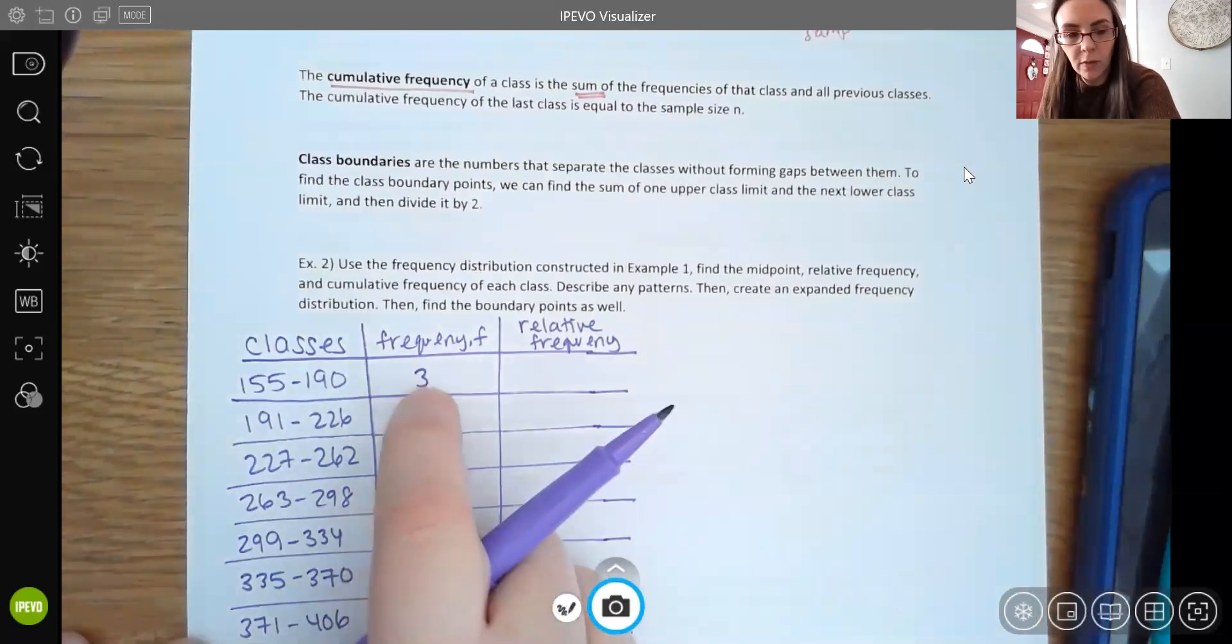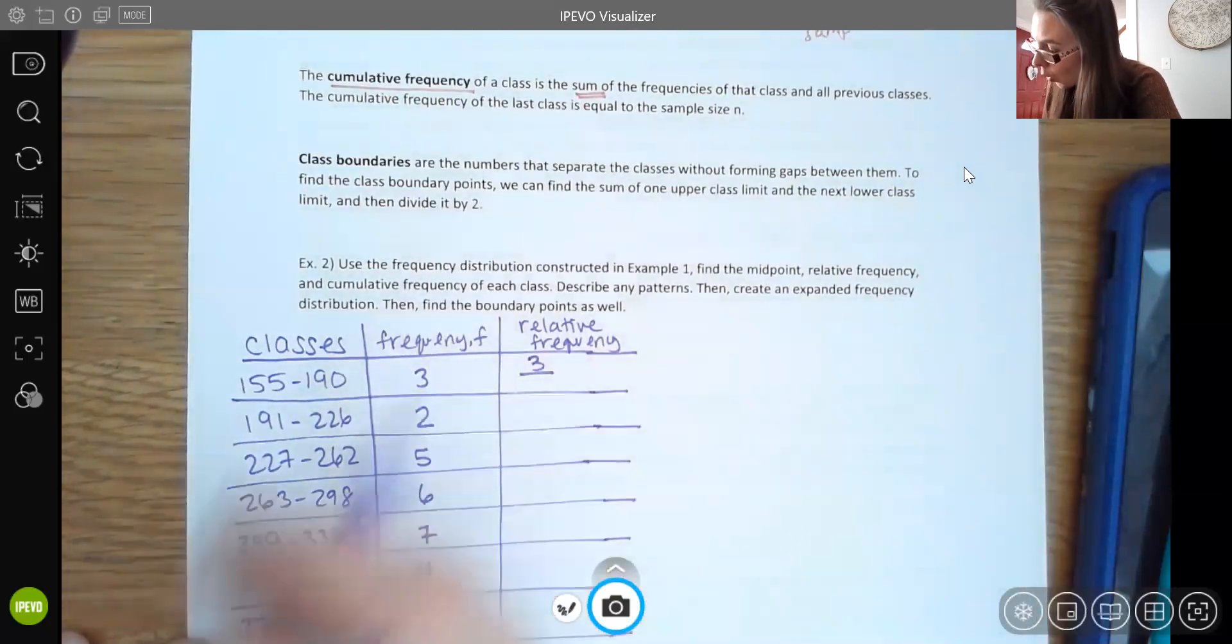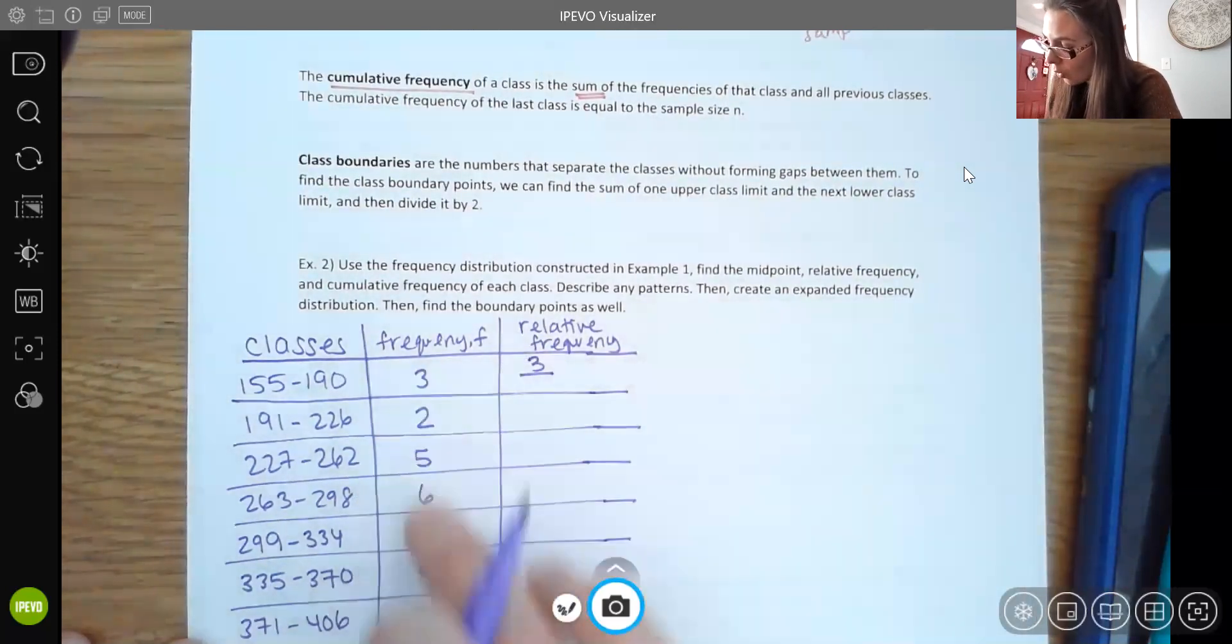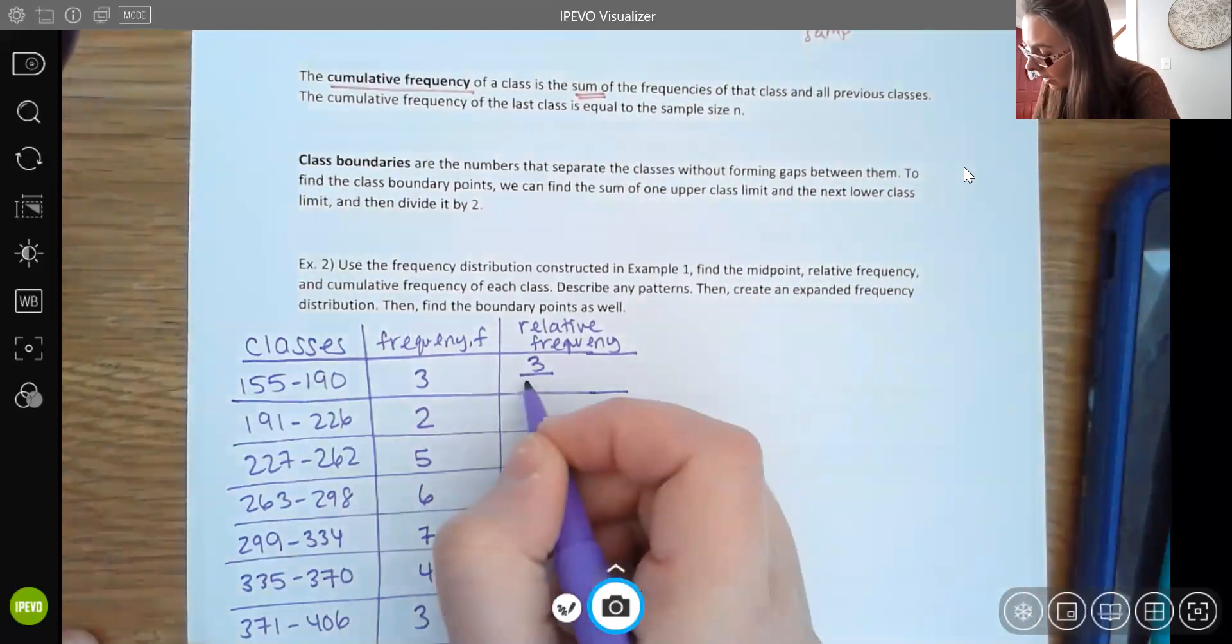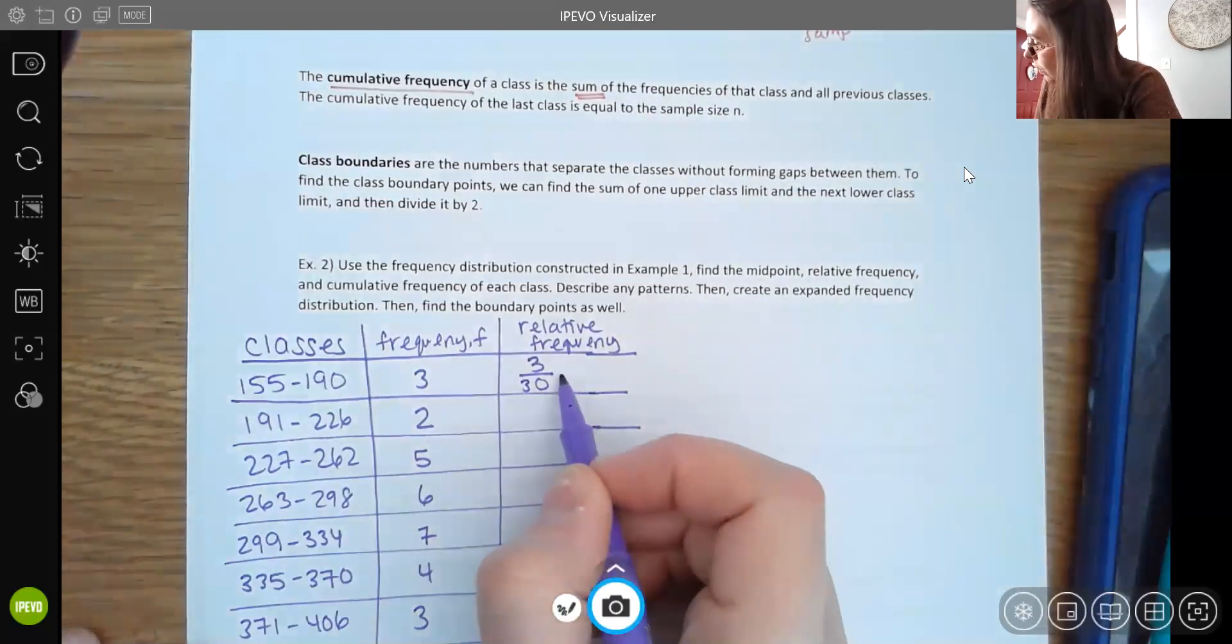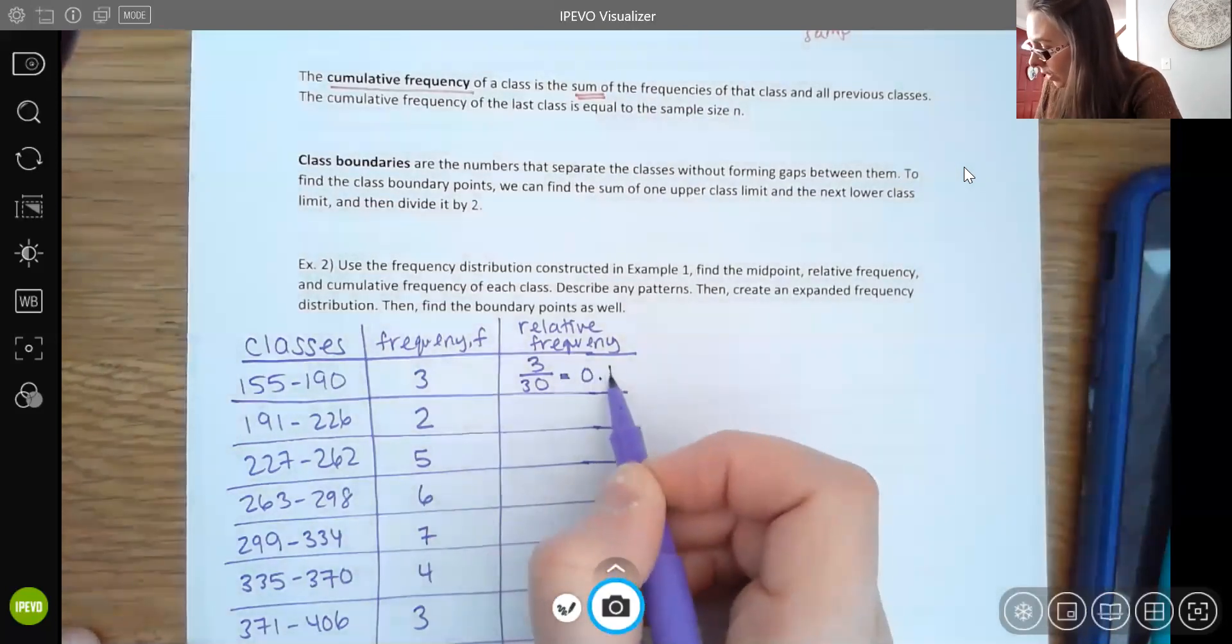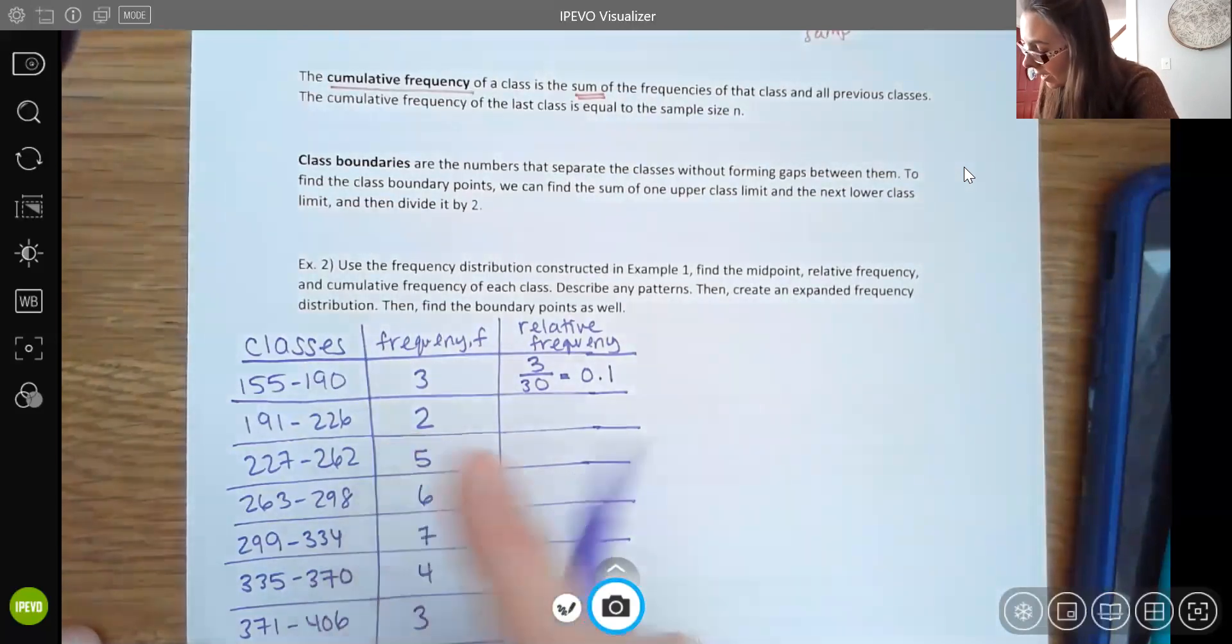What you do is you take your frequency from here. So I take that three and I divide it by my total. Remember, in this case, our total sum was 30. So you take that three and you divide it by 30. And you can just use your calculator here. Three divided by 30 is 0.1.